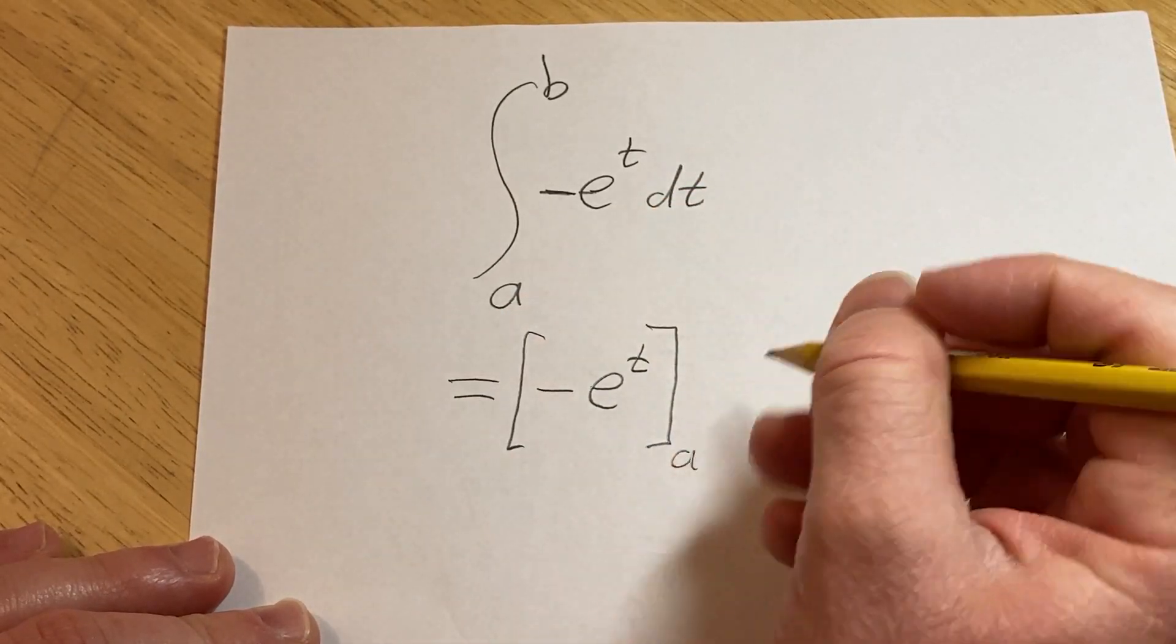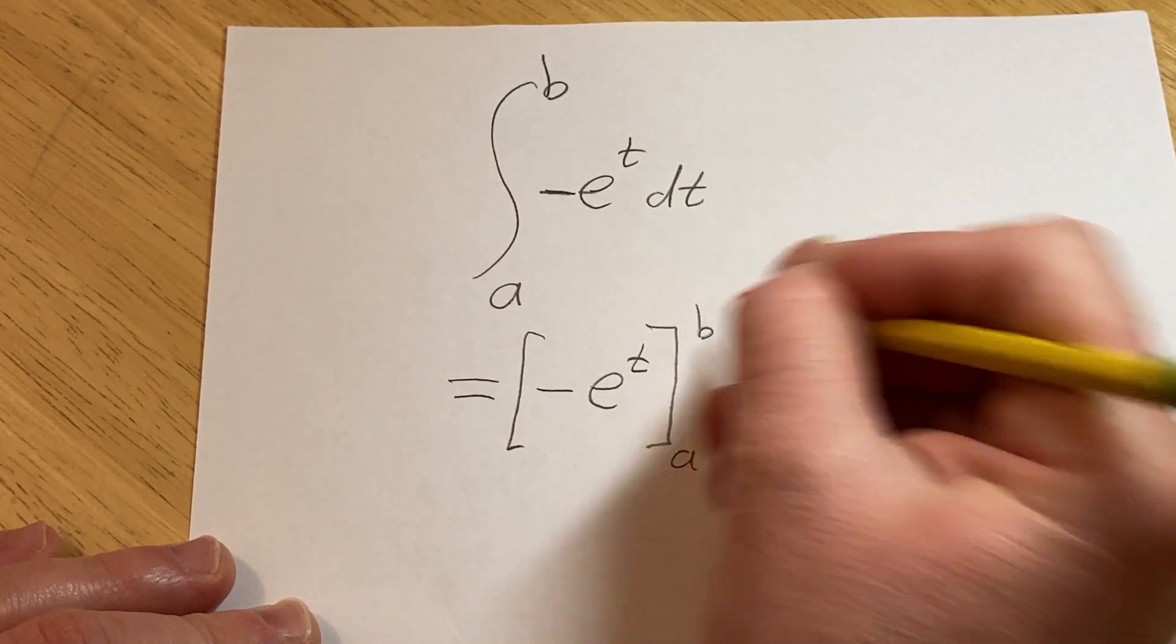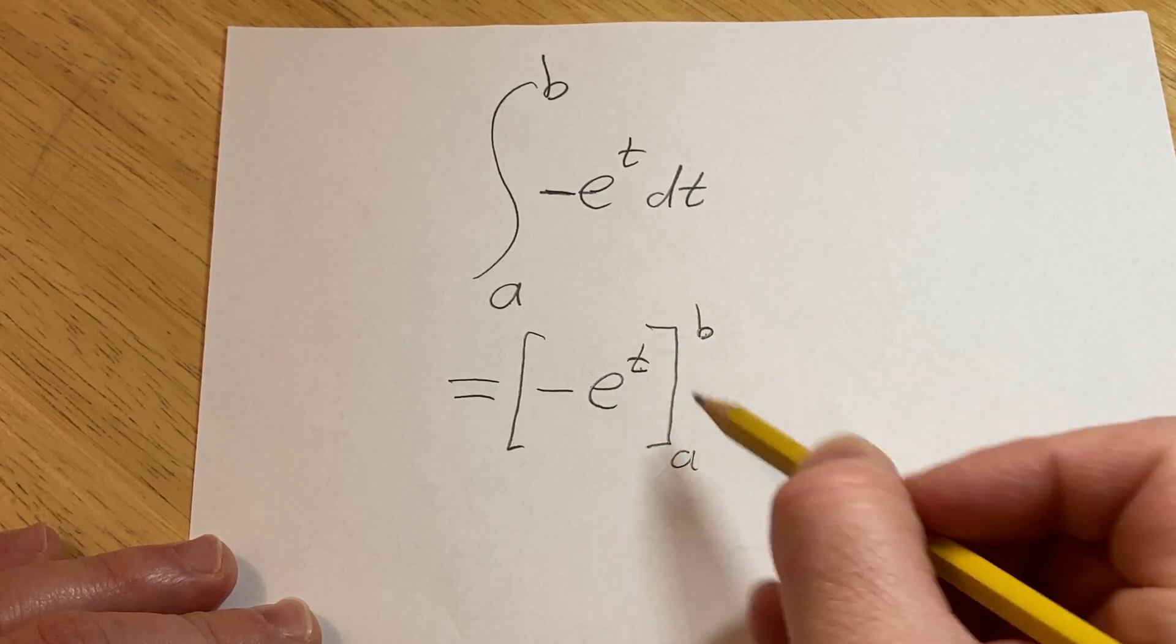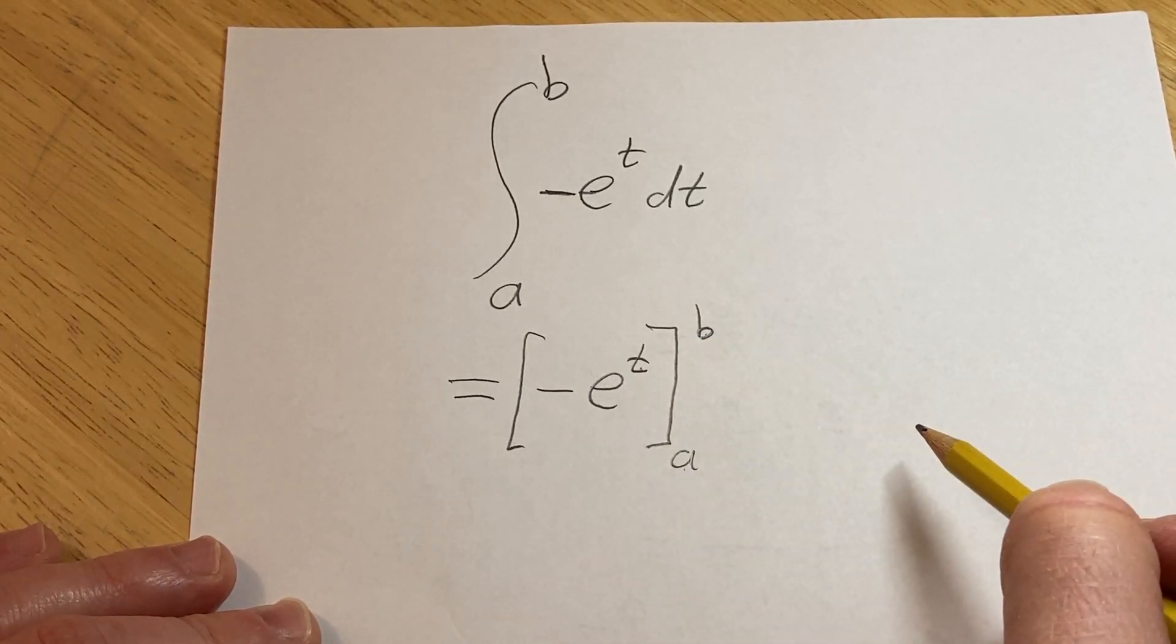And the lower limit goes here, and the upper limit goes over here. And the rule says that you first plug in the top number, subtract, then plug in the bottom number.